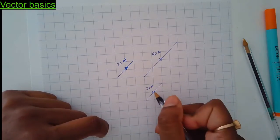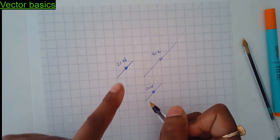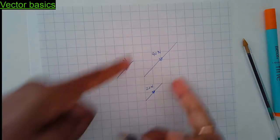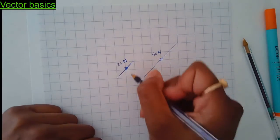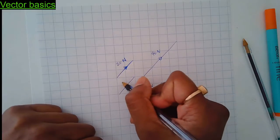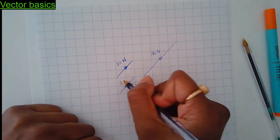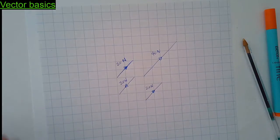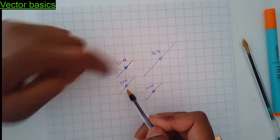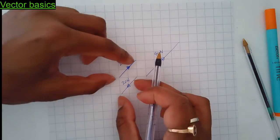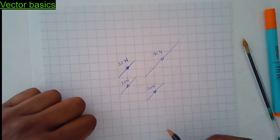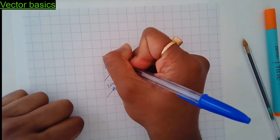That vector there is identical to that vector — same size, same direction. But if I have a vector going in the opposite direction, say 20 newtons, they're two different vectors: same size but one going that way and the other going the other way.